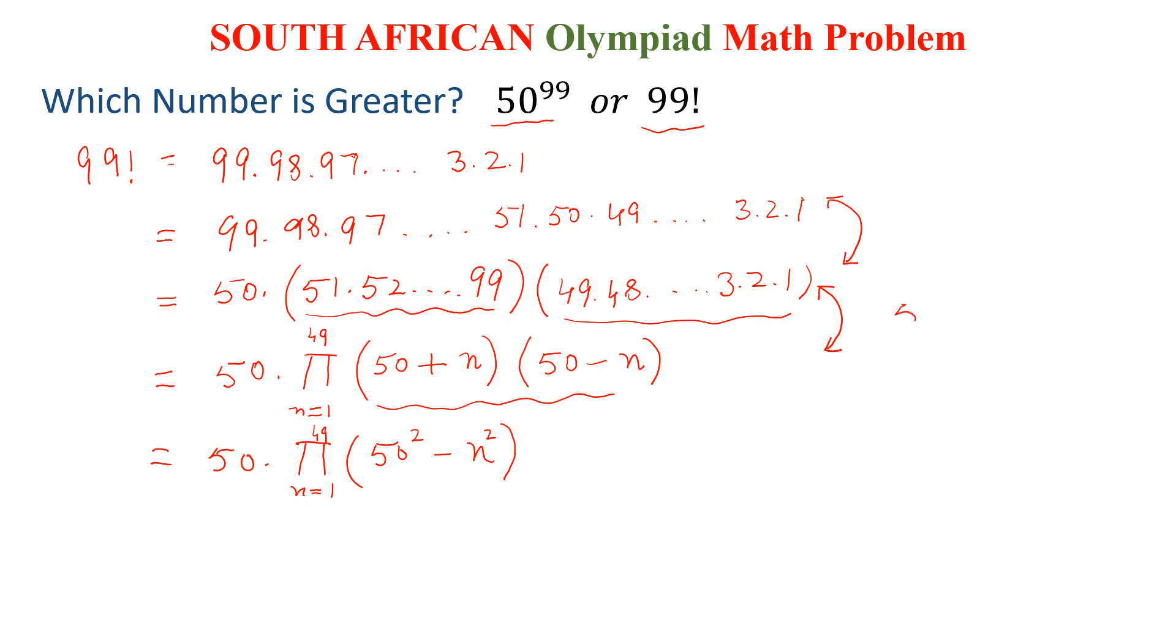We know that 50 square minus 1 square is less than 50 square. And similarly, 50 square minus 2 square is less than 50 square, and up to 50 square minus 49 square. So this is clearly less than 50 square.